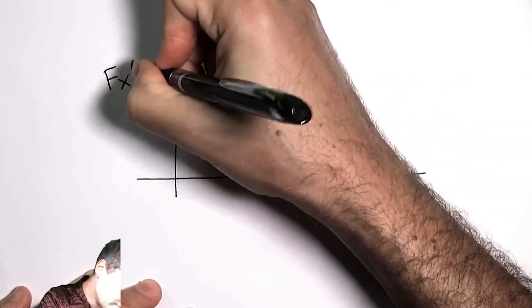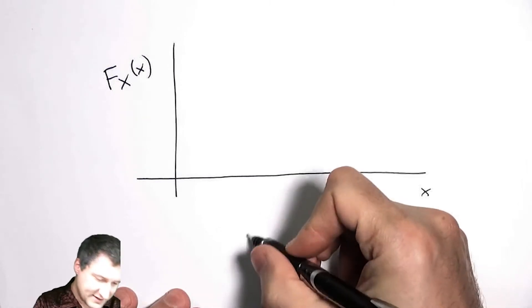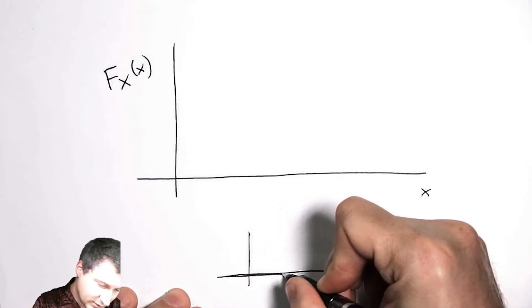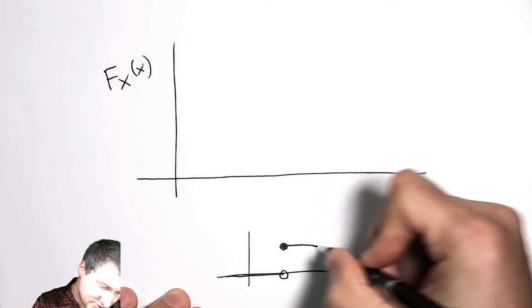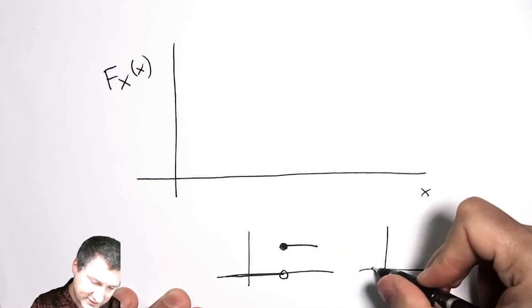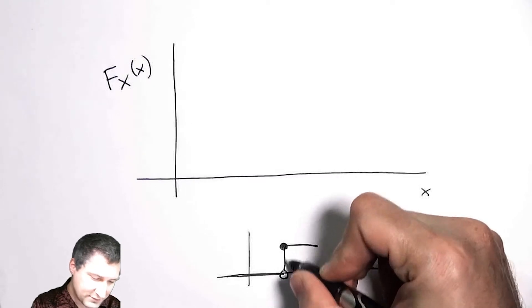Well, one thing to keep in mind is that to draw this in a really proper way you would use this kind of idea where you take a step function. You know, I can't actually draw in theory a function like this—this is not like a legal function, but we do it all the time in signals and systems anyway.